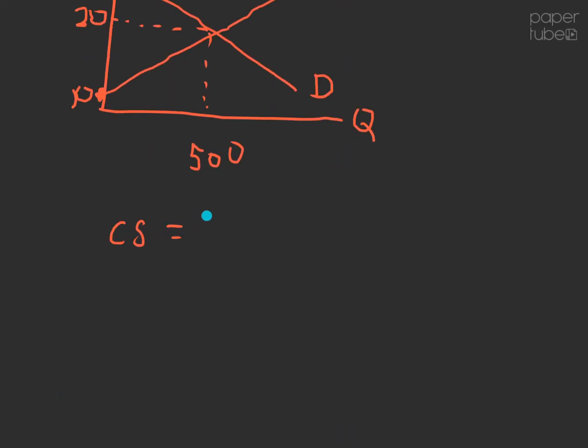Now we're going to calculate the consumer surplus using the formula for the area of a triangle, which is just one half of the base times height.